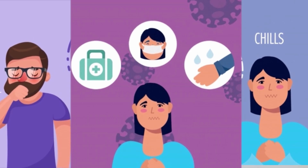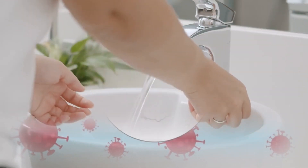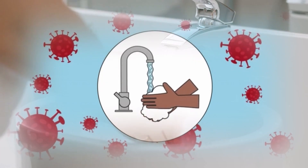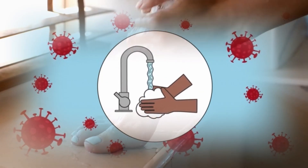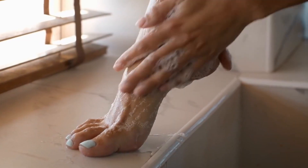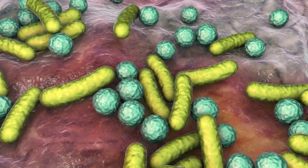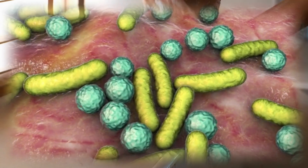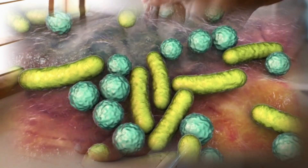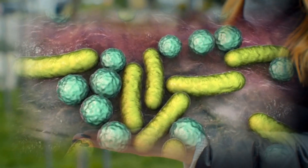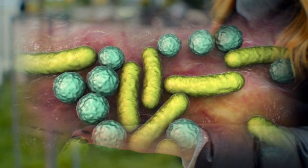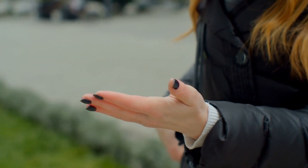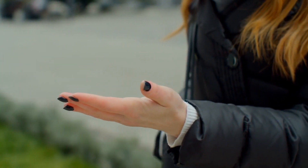One of the initial steps in addressing Tungiasis is proper hygiene. Infected individuals should thoroughly wash the affected areas with soap and water, ensuring cleanliness to prevent bacterial infections. Additionally, the use of antiseptic solutions can aid in reducing the risk of secondary infections.